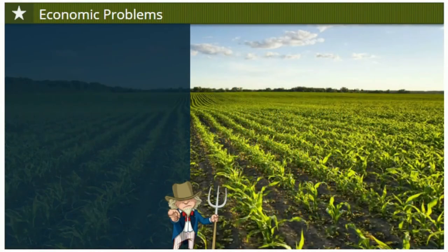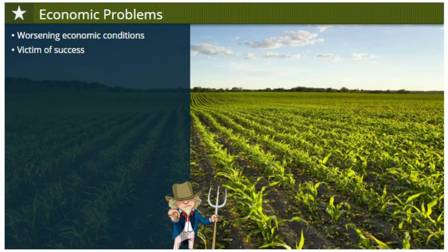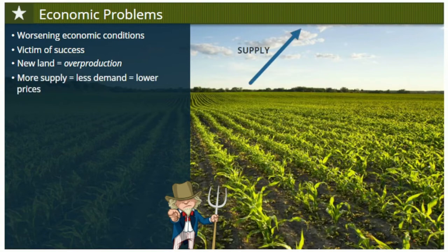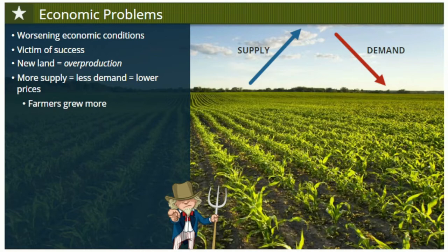At the same time, as farming became more complicated, farmers in the South and West faced economic conditions that seemed to get worse and worse. In a sense, farming had become a victim of its own success. The new Western lands opened up to agriculture led to the overproduction of farm goods. The most basic law of economics says that the more supply there is of something, the less demand there is for it, resulting in lower prices. When the prices at which they could sell their crops dropped, farmers grew even more — which dropped prices even further.